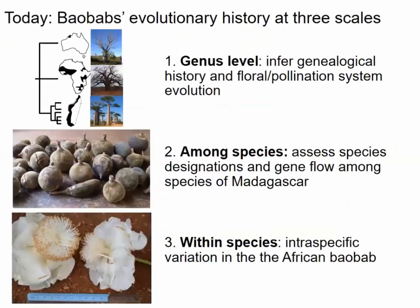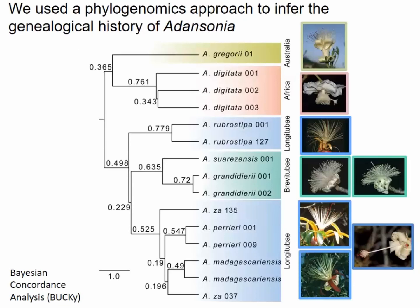Those are the key players in today's story. I'll walk through three vignettes at different scales of baobab evolutionary history: first macro-evolutionary patterns and genealogical history at the genus level including floral evolution; then geographic patterns of gene flow among species; and finally intraspecific variation in the African baobab. The phylogeny was produced using a custom designed targeted sequence capture approach and a Bayesian concordance analysis — so the branch values cannot be equated with bootstrap support.